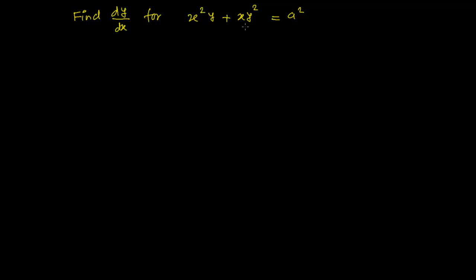In this type of implicit equations, you have to differentiate both sides — the left hand side as well as the right hand side — with respect to x. After solving, you'll get dy over dx somewhere on the left or right hand side.